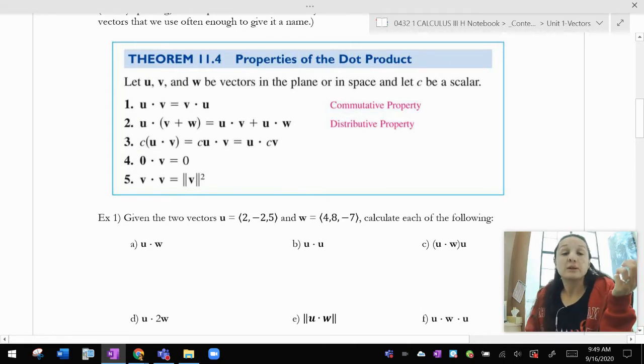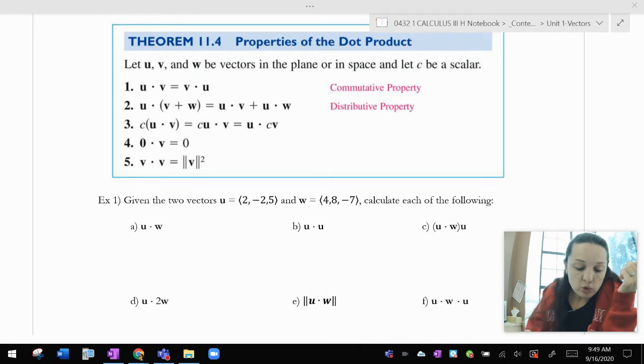Now, there are properties of the dot product. And in fact, since the dot product is kind of like a product, it allows for the commutative and the distributive property, just like multiplication would in regular operations. So u dot v is the same as v dot u. U dotted with v plus w, you can distribute the u and do u dot v plus u dot w.